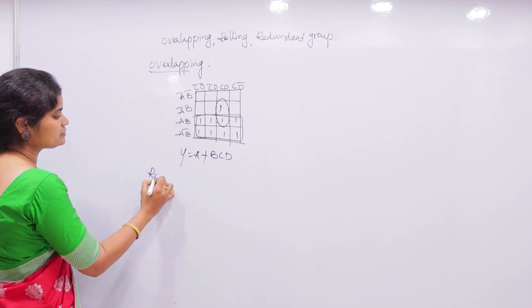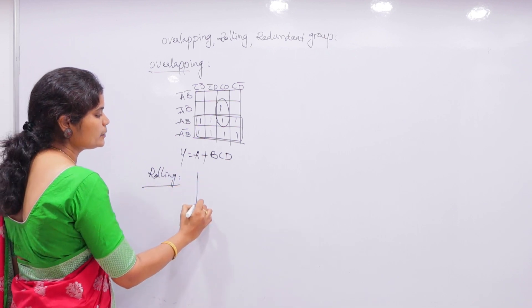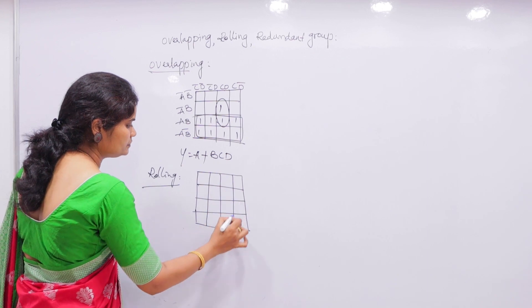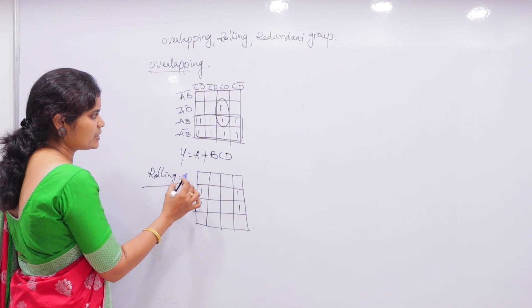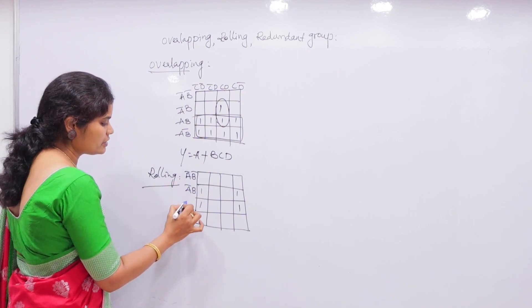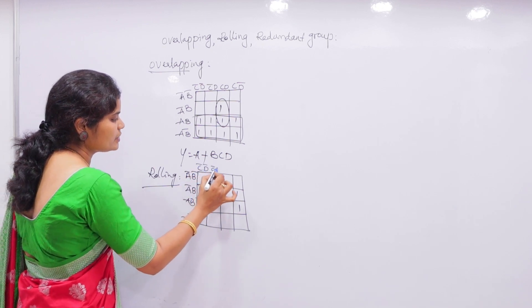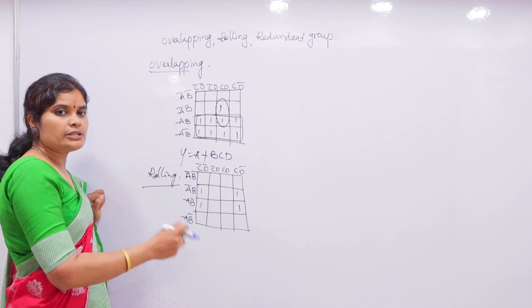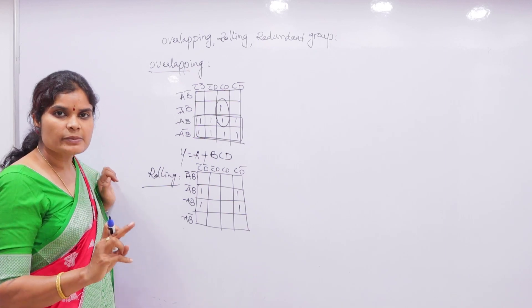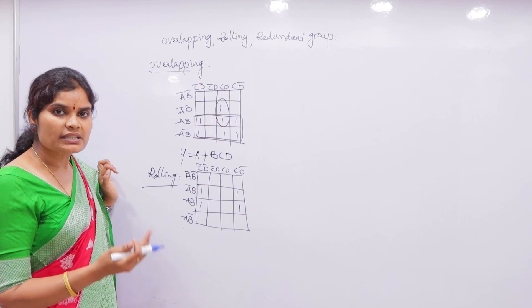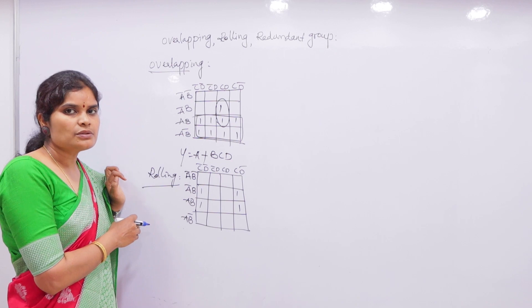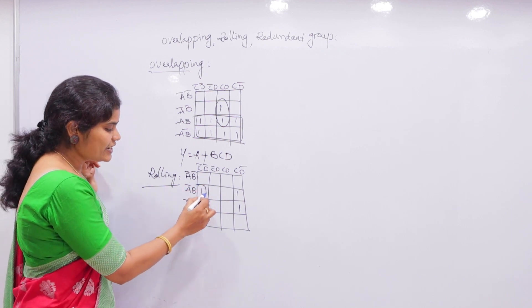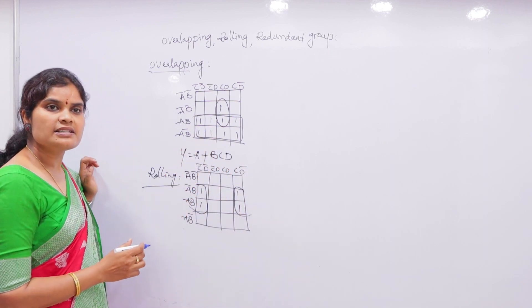Then we will go with the rolling technique. Consider the same example: A-bar B, A B, A B-bar across the top, and C-bar D-bar, C-bar D, C D, C D-bar on the side. Suppose the number of ones are like this. Basically, when you see this, you would think of pairs only — two pairs. But as we know, a pair will eliminate only one variable.